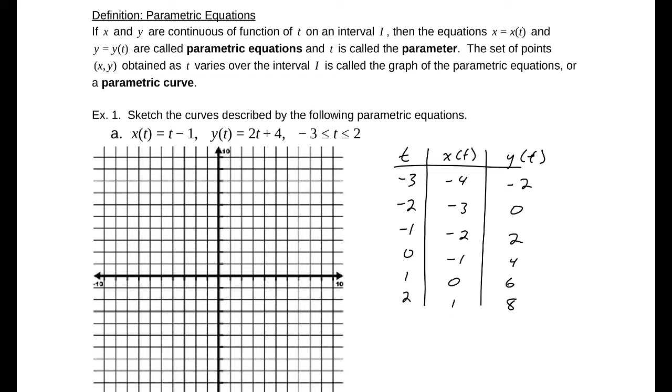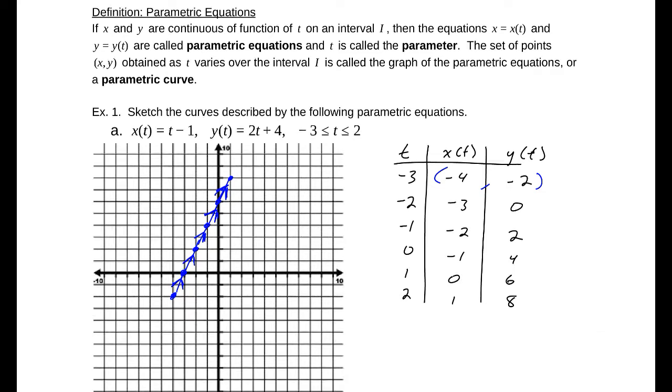So the points that I'm going to plot are these: negative 4, negative 2; negative 3, 0; negative 2, 2; negative 1, 4; 0, 6; and 1, 8. So our function appears to be linear here. I'm going to go ahead and put arrows on this, indicating that as t increases, we begin from one end and go to the other. And that is our parametric curve.